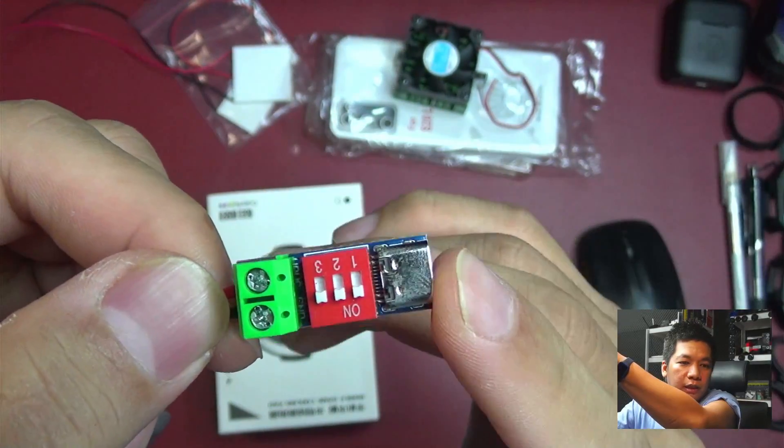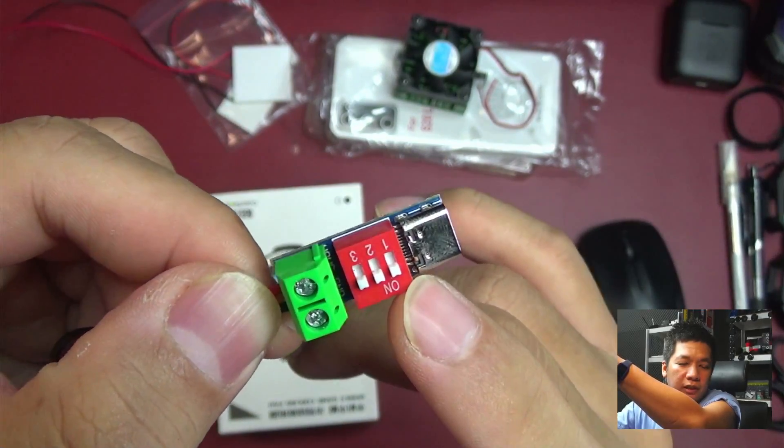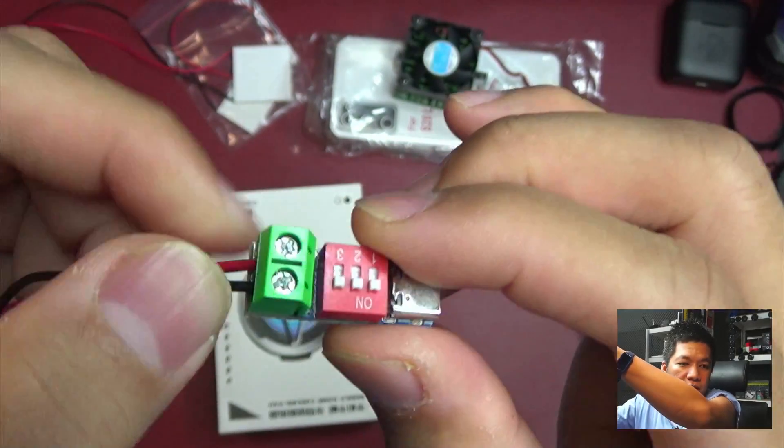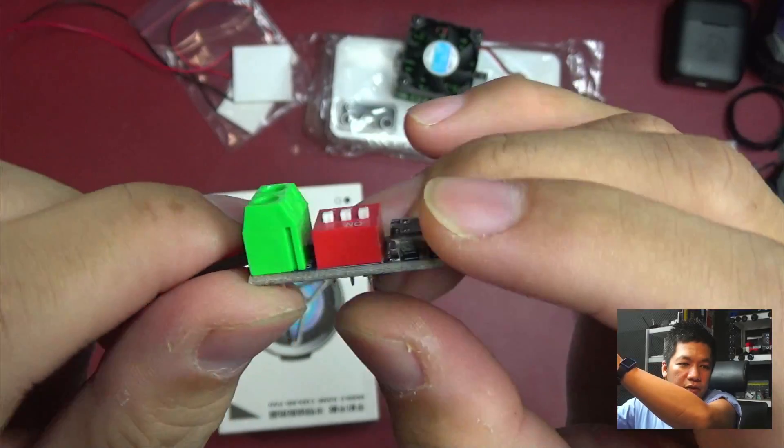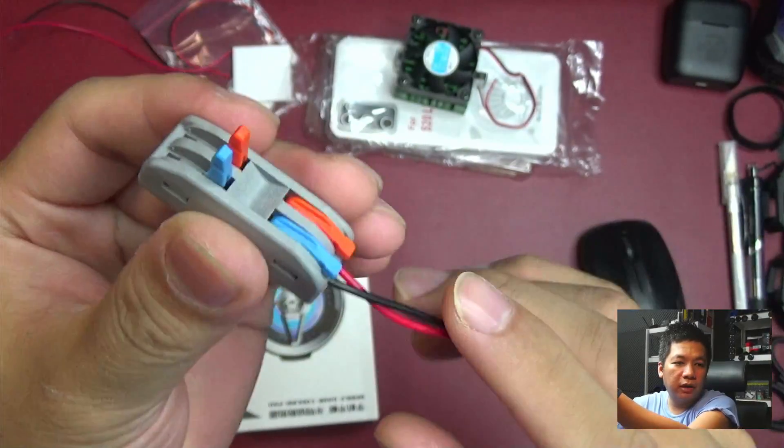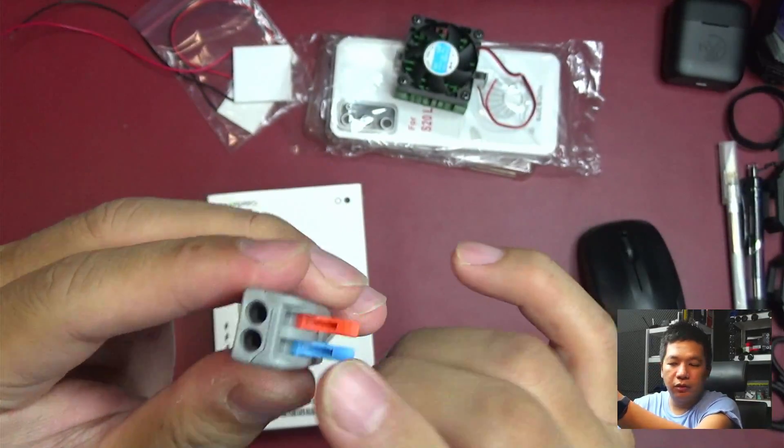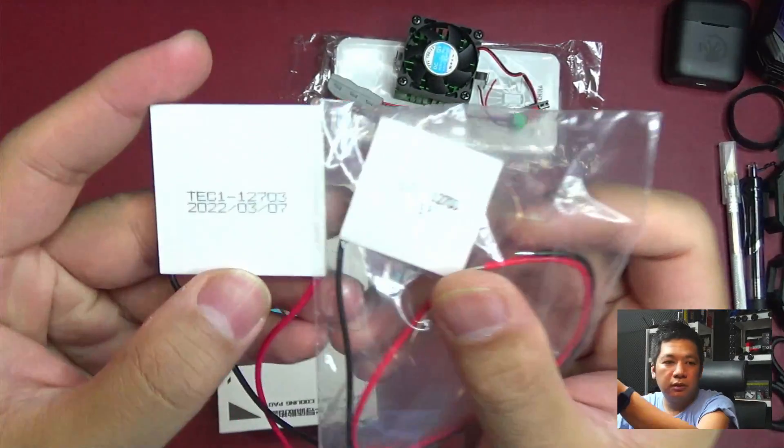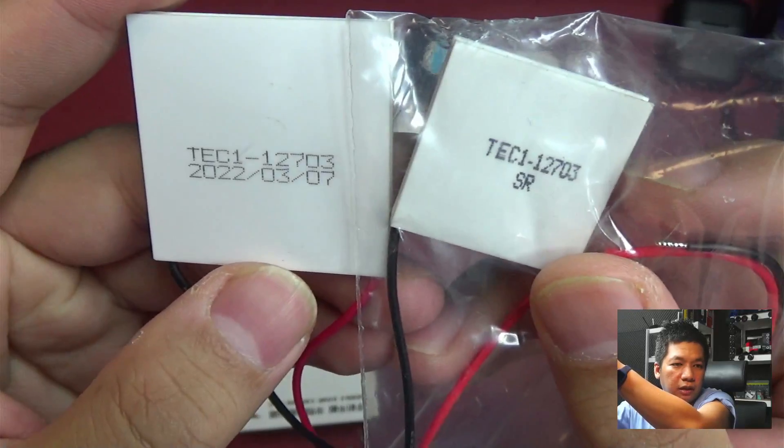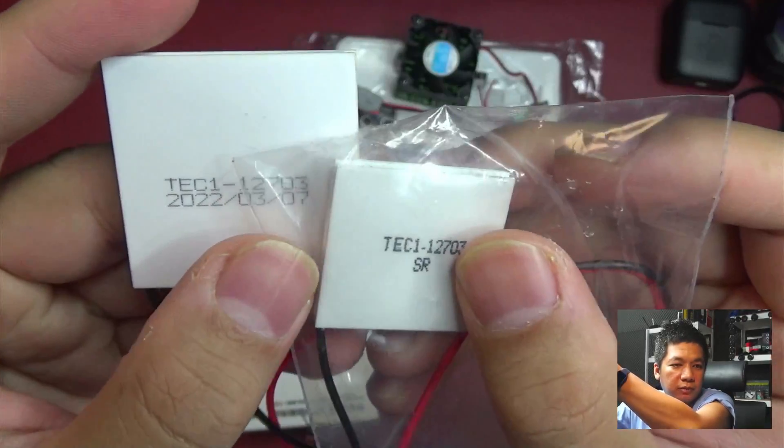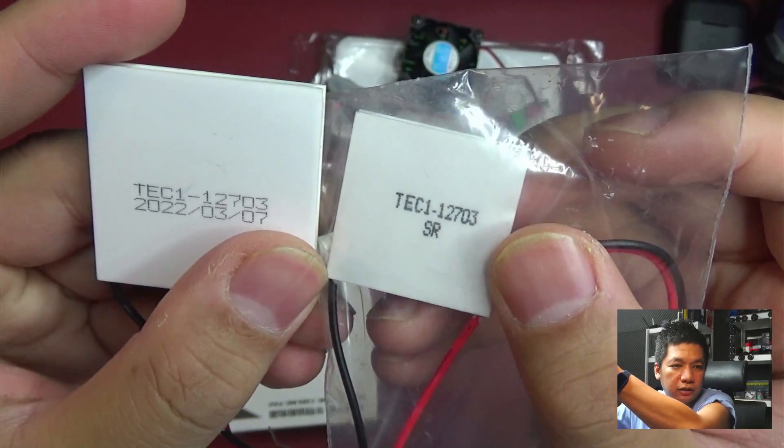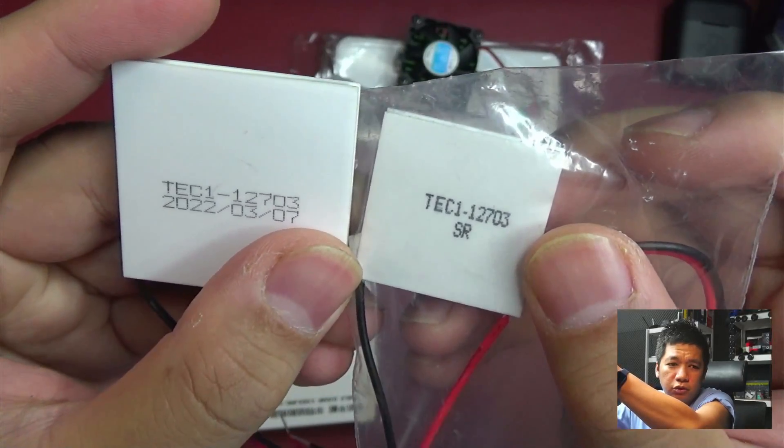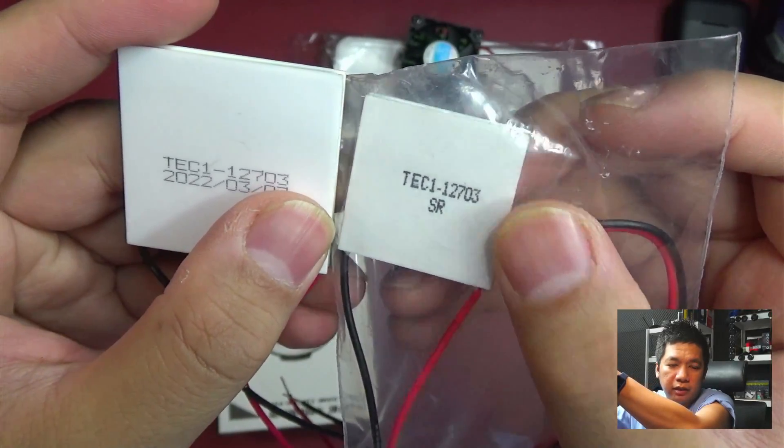Tapi kalau mau pasang sebenarnya, jangan beli yang gini sih ya. Kan beli trigger yang langsung 9V, lebih kecil. Kalau ini buat ngetes-ngetes doang, soalnya gue biar gampang pakenya. Jadi nggak usah solder-solder. Sama TEC-nya aja. Jadi kita akan coba pakai 2 TEC, sama-sama 12703, berarti 3 ampere ya.